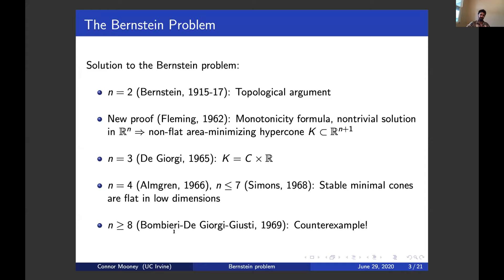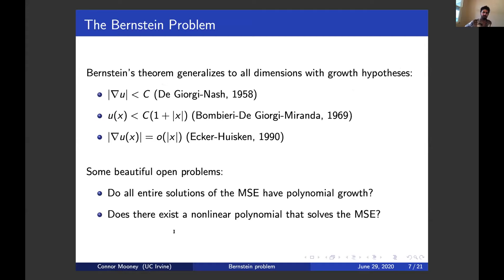That solved the Bernstein problem. To conclude the introductory discussion, we know the Bernstein theorem fails in dimensions eight and higher, but you could ask: if you add some growth hypotheses, what happens? For example, a harmonic function with polynomial growth has to be a polynomial. Some examples of related results are: if you have a global solution with a bounded gradient, it has to be a linear function — due to De Giorgi and John Nash in the late fifties — because when the gradient is bounded, the equation becomes uniformly elliptic and the Harnack inequality applies.